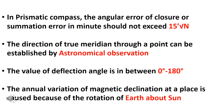In the Prismatic compass, the angular error of closure or summation error in minutes should not exceed 50 minutes multiplied by the square root of n, where n represents the number of stations or sides of the traverse.